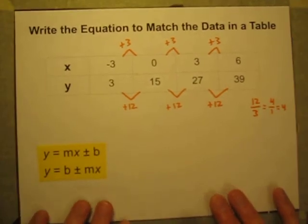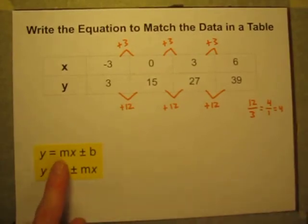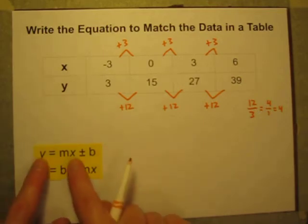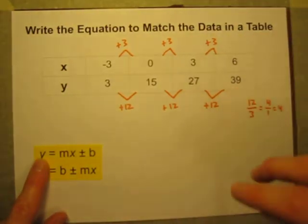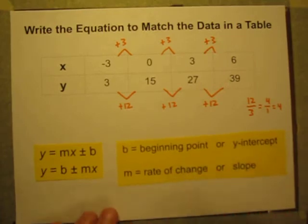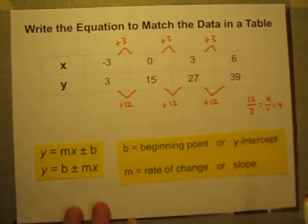And so I can write my equation in this form. y is equal to mx plus or minus b. Or if I turn it around, y is equal to b plus or minus mx. And in this equation, I've got y's and x's, which are the points in the data table. And the m and the b are, b is your beginning point, the beginning point. And the m is your rate of change, or the slope of the line if you were to graph these.